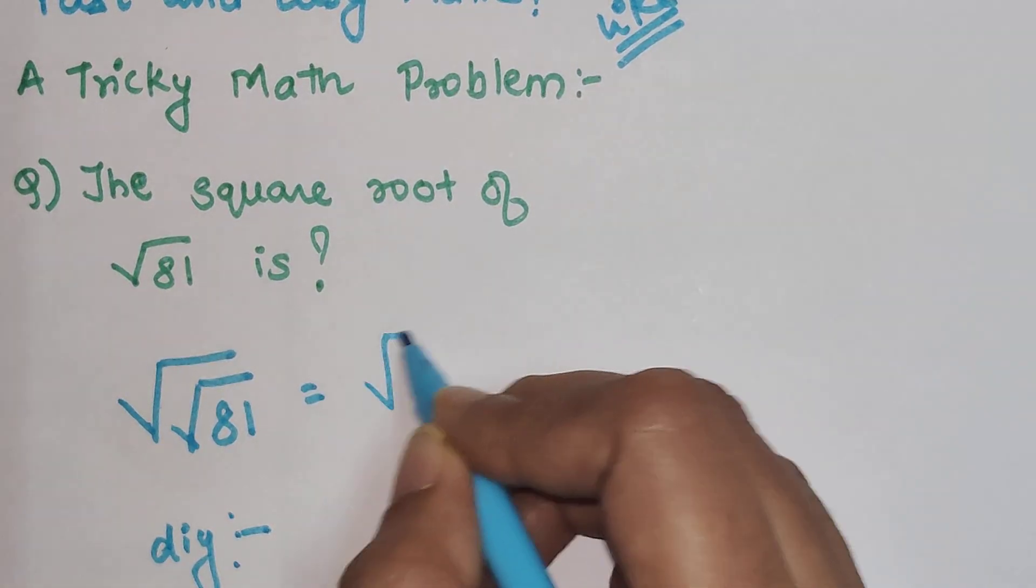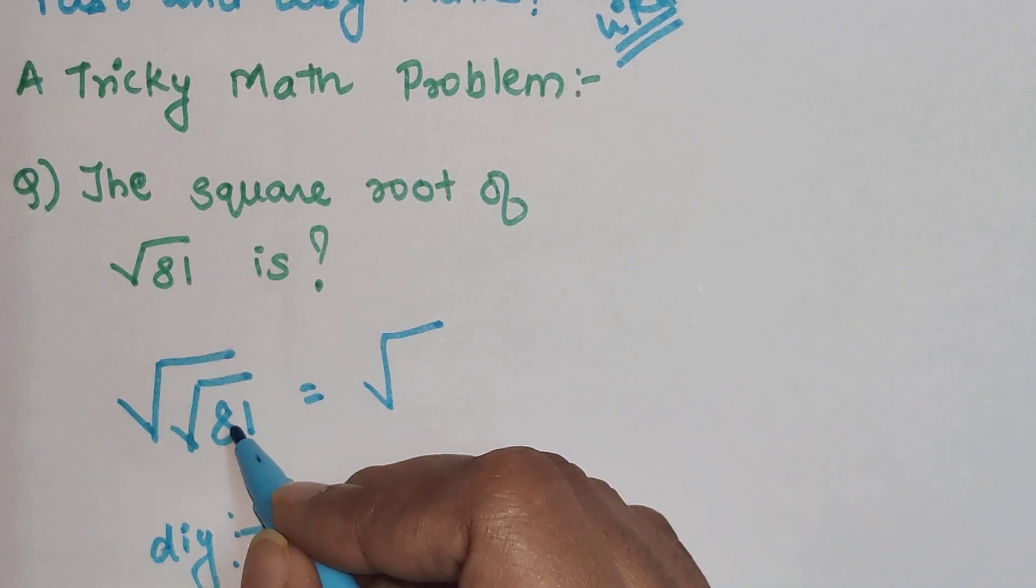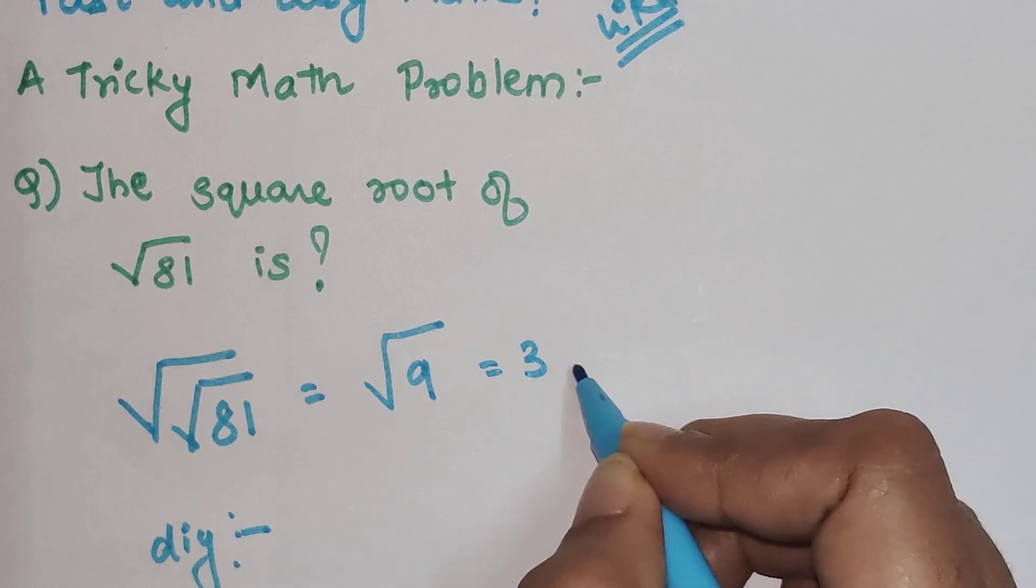So here we have square root of square root of 81. Whenever you have square root under the square root, you start from the innermost. So this is 9, then again the square root of this is 3.